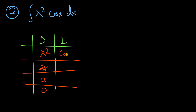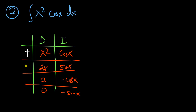The other function is cos X in the I column. If I integrate cos X, I get sine X. If I integrate sine X, I get negative cos X. If I integrate negative cos X, I get negative sine X. Then we put the signs: positive, negative, positive, negative, and so on.